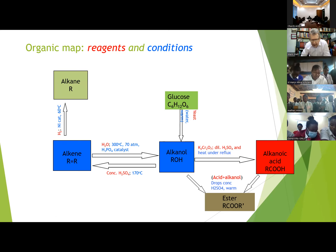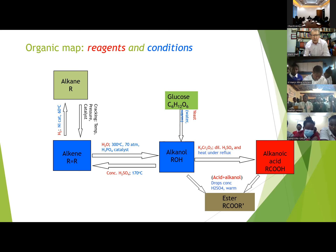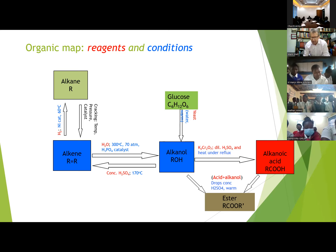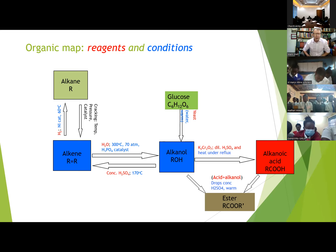To go the other way — alkane into alkene — is cracking. This converts a group of larger alkanes into shorter alkanes and alkenes. Cracking requires high temperature, high pressure, and a catalyst (normally aluminium oxide). Many alkenes are produced industrially this way.